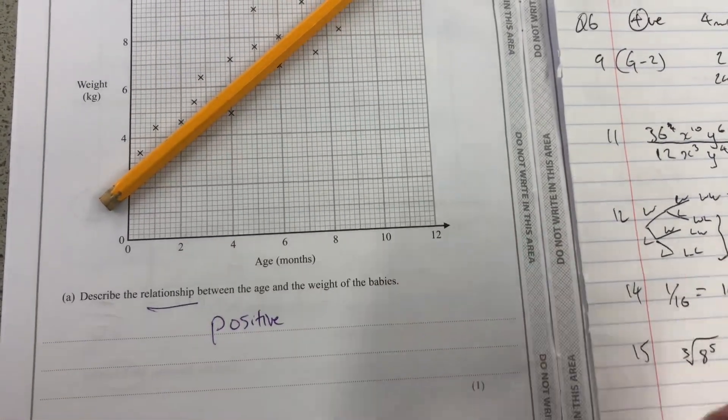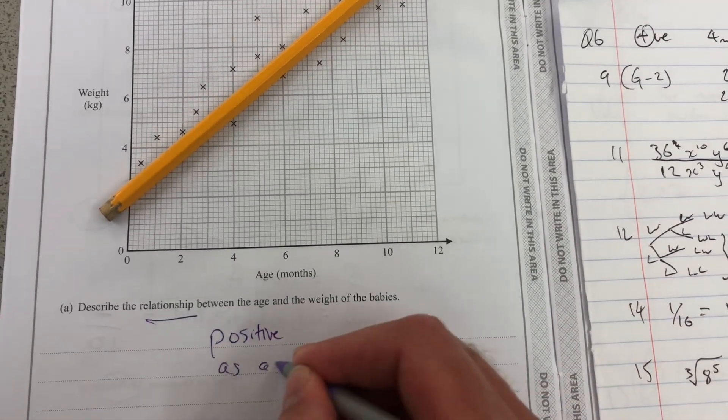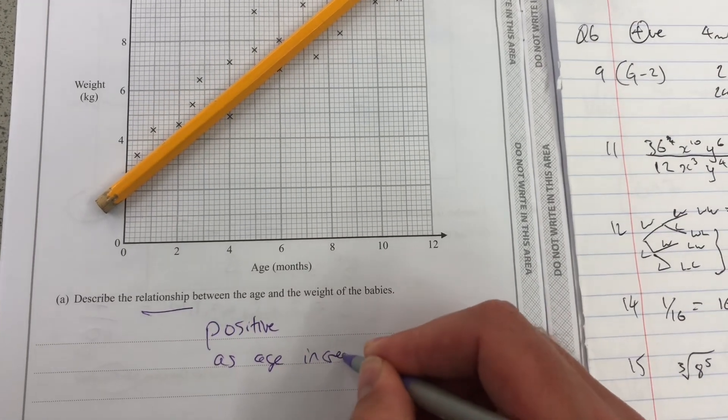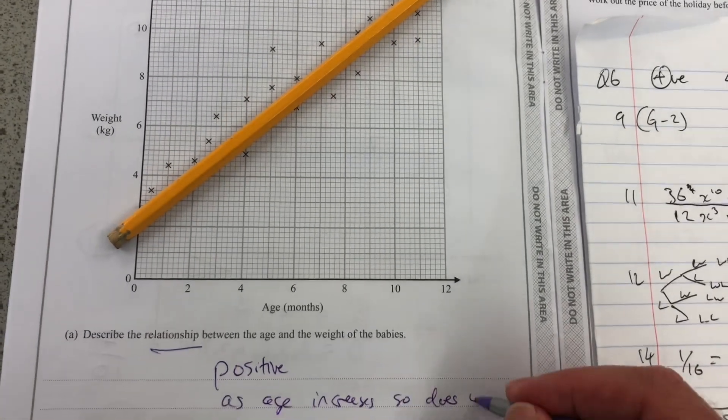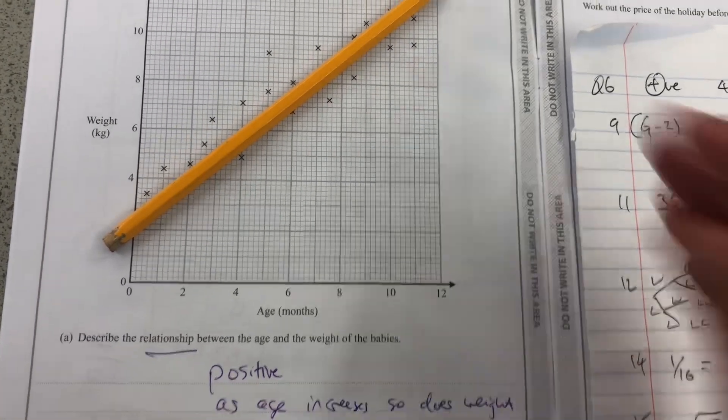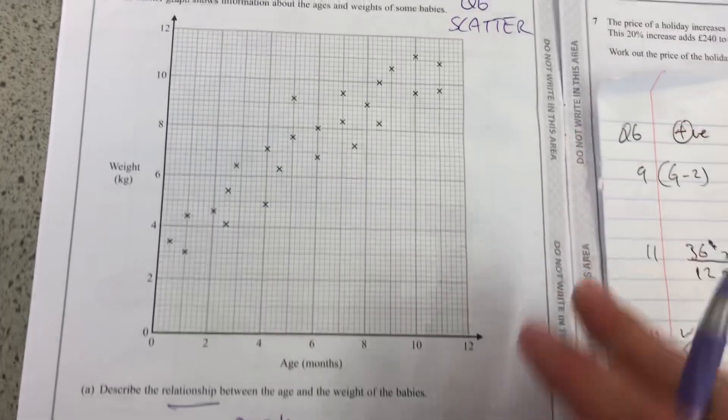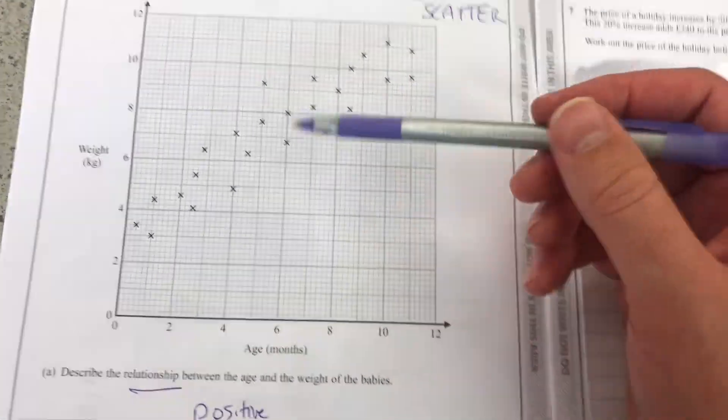You might want to say more than that. As age increases, so does weight, as is expected. But not in all cases, that's why it's a scatter graph, some more so than others or earlier than others.